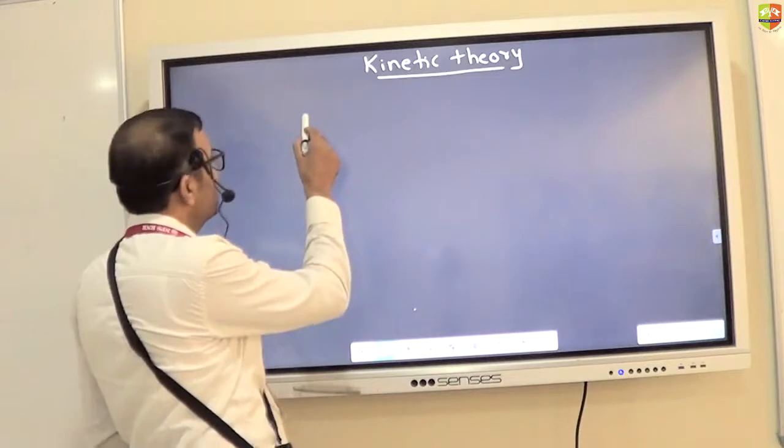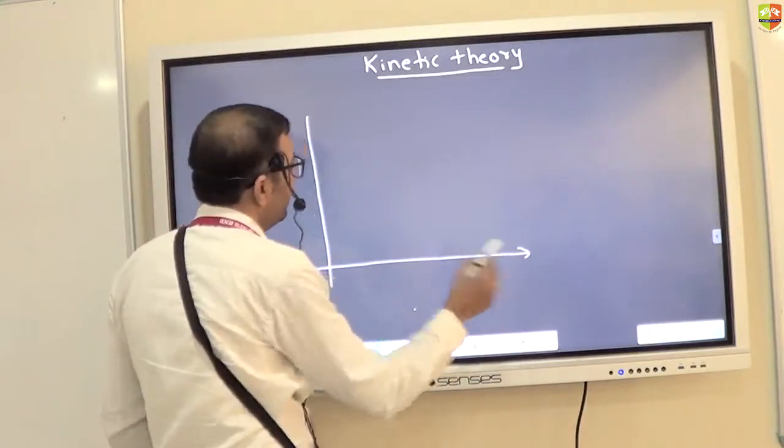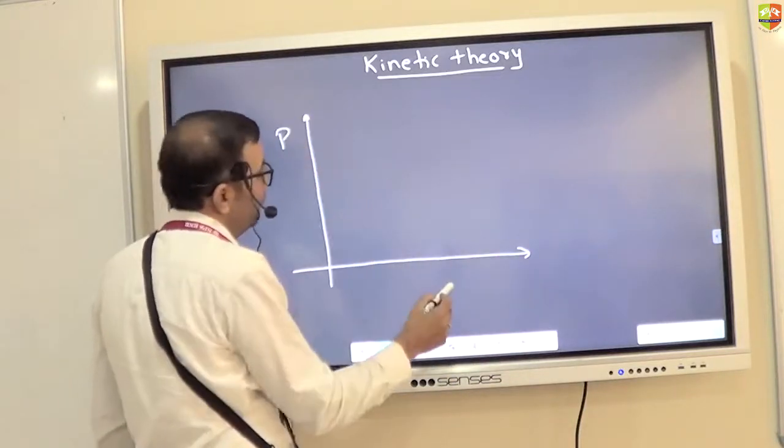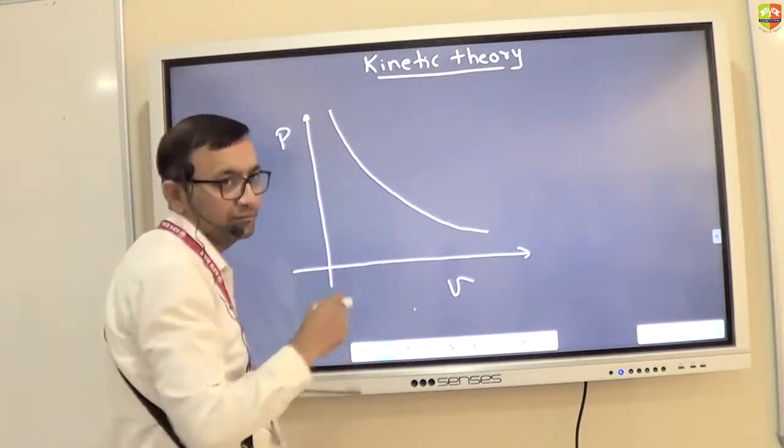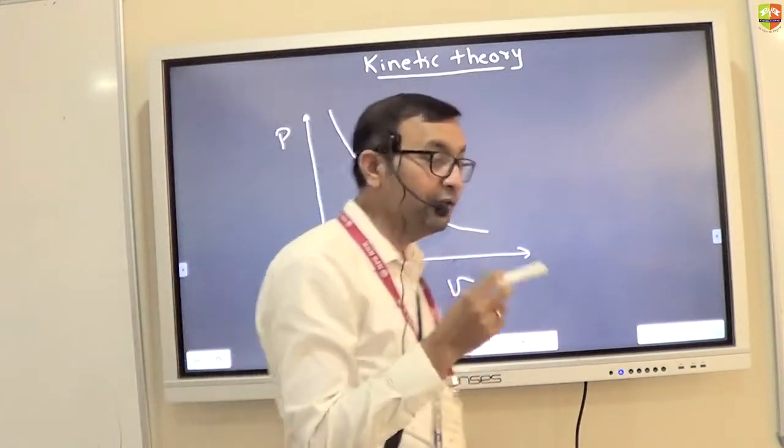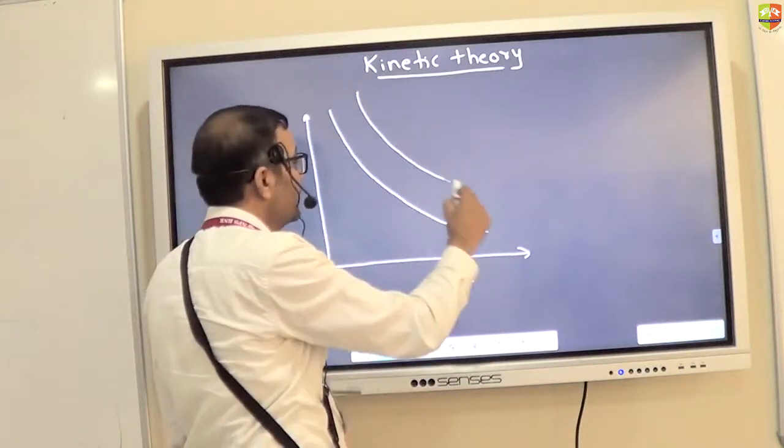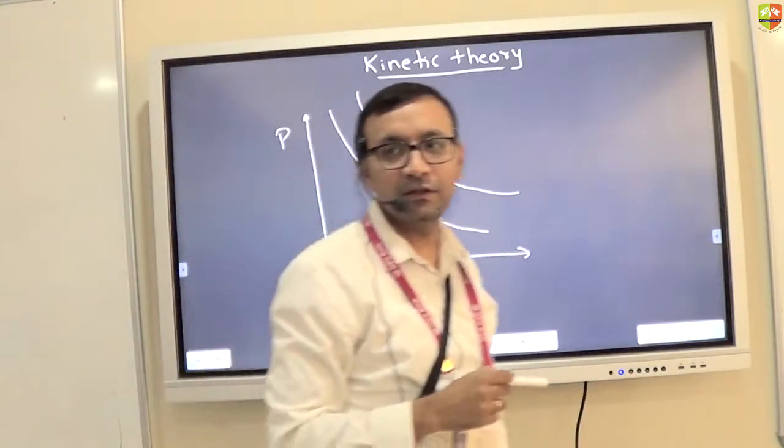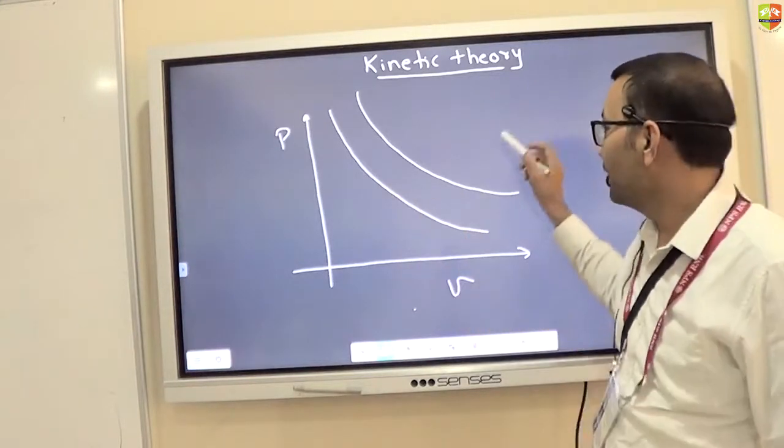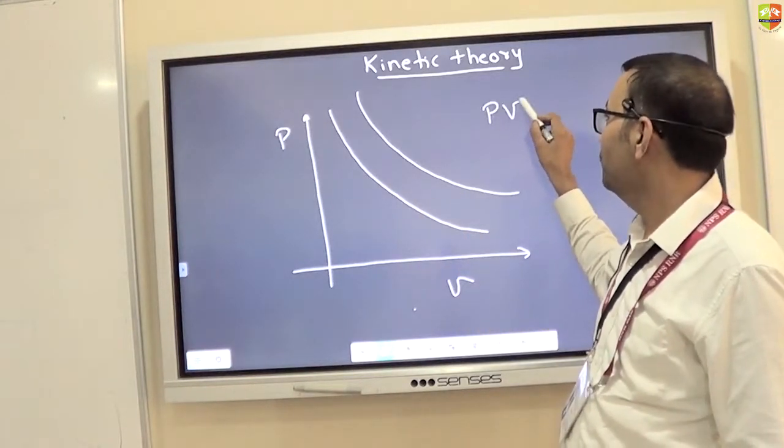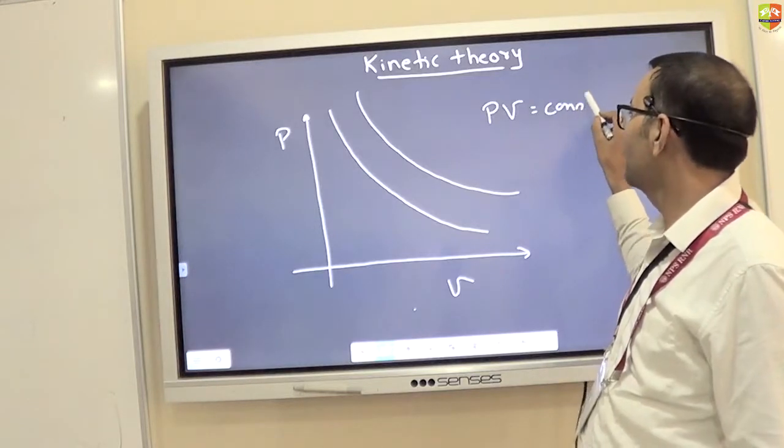So he has taken a gas and then plotted pressure and volume. And he found out that the curve is like this at a particular temperature. And if he increases the temperature, the curve shifts upwards. Like that. And this curve represents pressure into volume becoming constant.